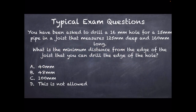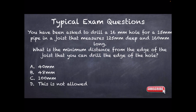Here's another typical exam question. You have been asked to drill a hole 16 millimeters in diameter for a 15-millimeter pipe in a joist that measures 125 millimeters deep and 160 millimeters long. What is the minimum distance from the edge of the joist that you can drill the edge of the hole? Note: they deliberately throw a lot of figures at you to confuse — most of them are not relevant. The 15-millimeter pipe size and the depth do not matter here.